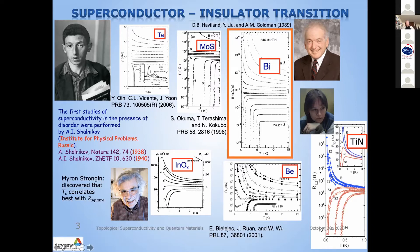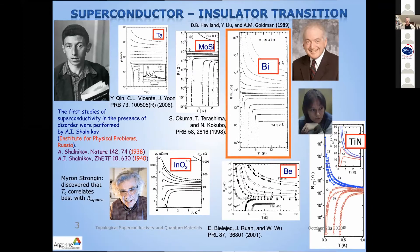This is the superconductor-insulator transition — curves obtained in the group of Tatyana Baturina. This is the sharpest superconductor-insulator transition observed, on titanium nitride films.